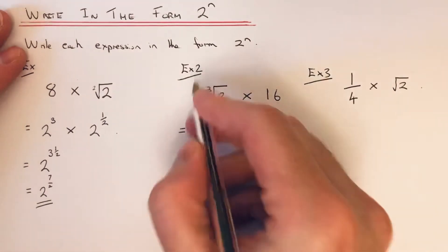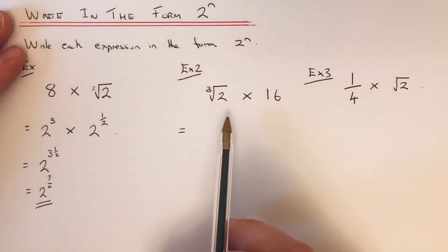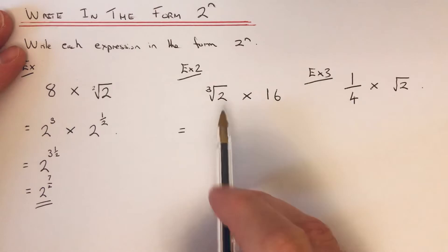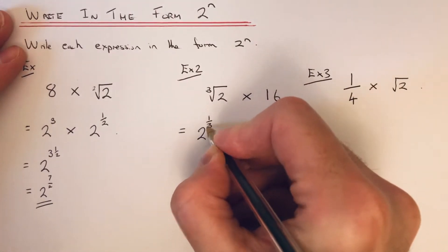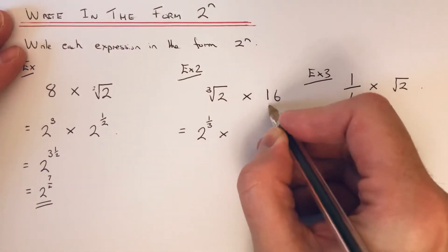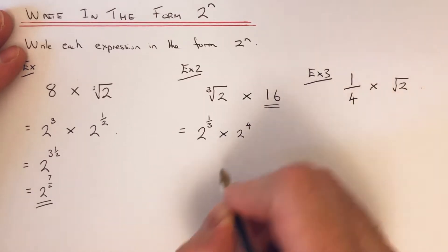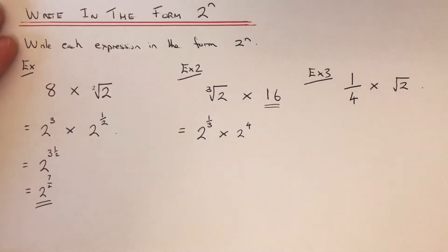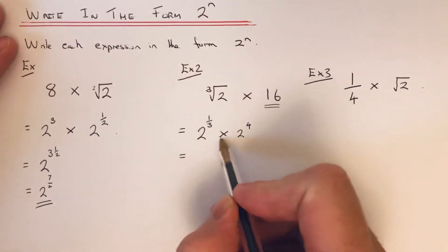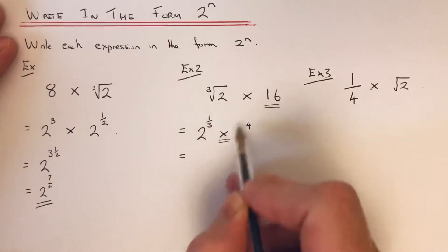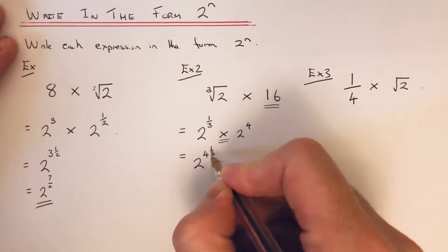So let's have a look at the second example. This time we've got the cube root of 2 times 16. The cube root can be written as 2 to the power of a third. And then we can change 16 to 2 to the power of 4, because 2 times 2 times 2 times 2 is 16. Again, we're multiplying these two numbers, so we can add the powers. That will give us 2 to the power of 4 and a third.